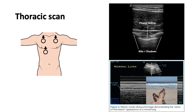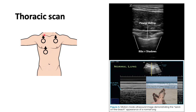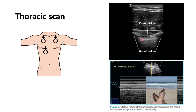For the thoracic scan, use a curvilinear probe with less depth, or a linear probe with high frequency for a clearer image. Place the probe in a longitudinal plane with the dot facing towards the head in the mid-clavicular line on either side. When lying supine, air tends to collect anteriorly in the context of pneumothorax, making ultrasound more sensitive than x-ray. Between the two rib shadows you can see visceral and parietal pleura sliding — this is also called the comet tail sign or as if ants are marching.